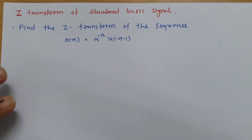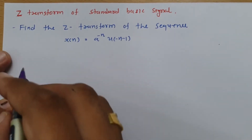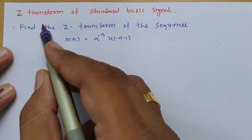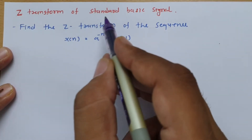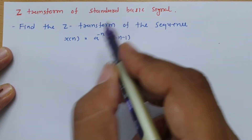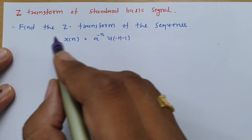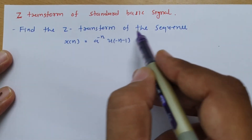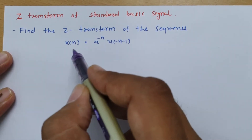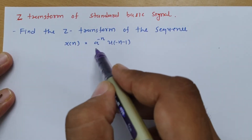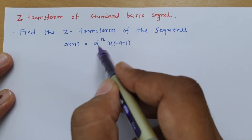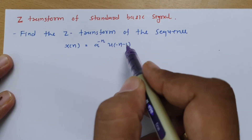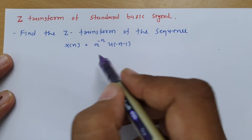Welcome to the signal and system lecture series. In this session, I will be explaining the Z-transform of standard basic signals. We have the question: find the Z-transform of the sequence x(n) = a^(-n) · u(-n - 1).